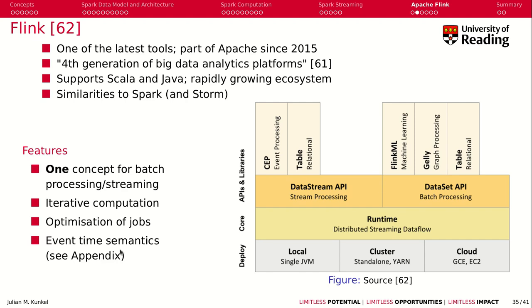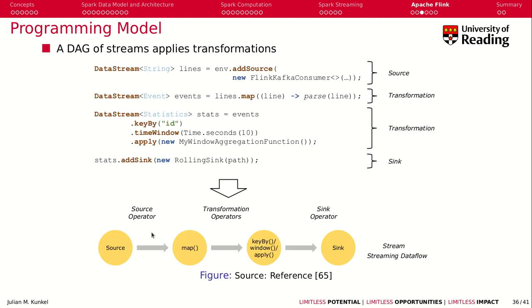Flink has an interesting semantics called event time semantics, which you will find in the appendix as there's no time to cover it here. The programming model of Flink basically allows you to specify a DAG applying transformations. Here we see such a streaming dataflow: we have a source, we apply map, then we group the data by a key, we create sliding windows and apply a function over those sliding windows, and finally the data gets driven to a sink. Here you find the respective code, which is pretty much building together this little graph.